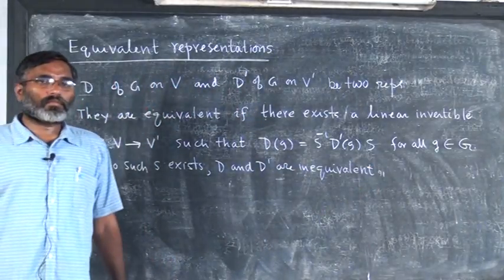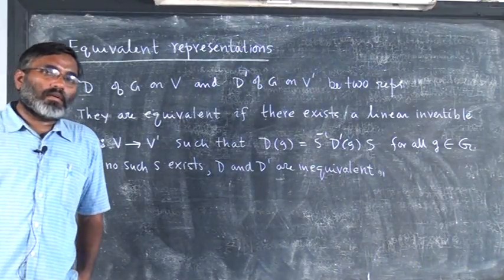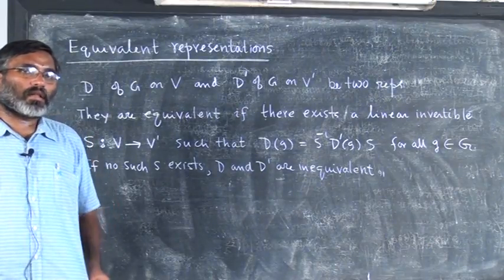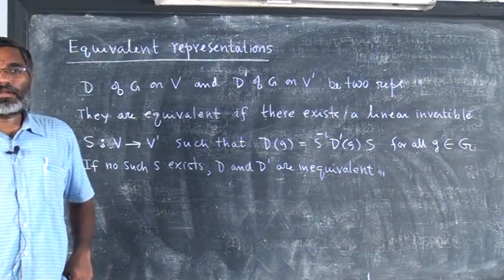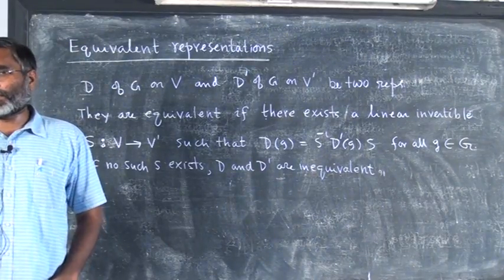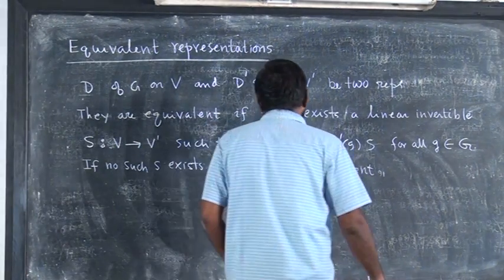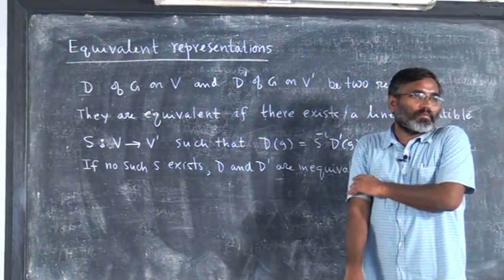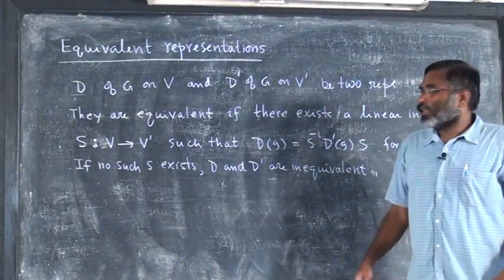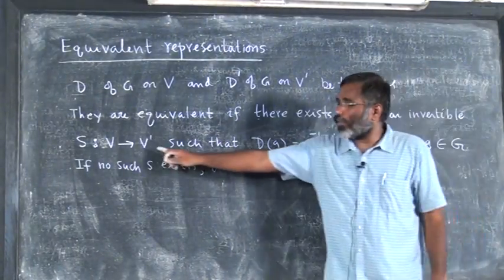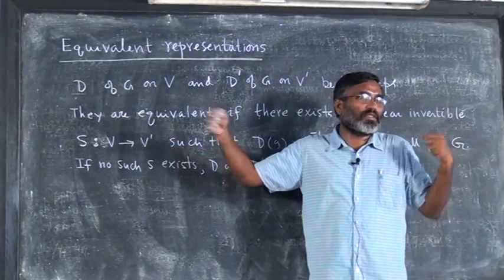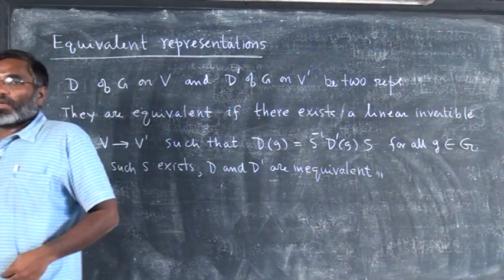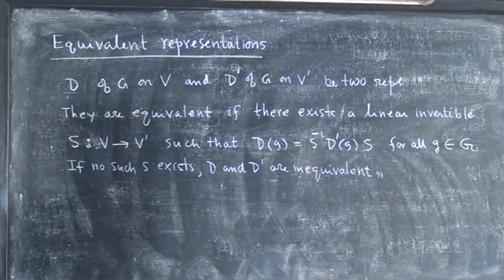One sure way of producing two inequivalent representations is to choose V and V′ as vector spaces of different dimensions. If they are of different dimensions, no invertible map S from V to V′ exists. So one sure way of producing inequivalent representations is to take two vector spaces of different dimensions.